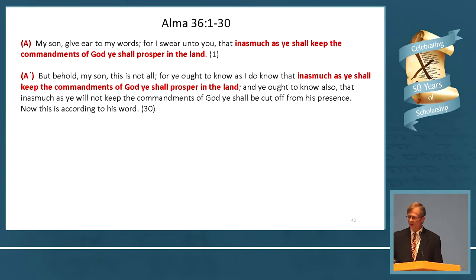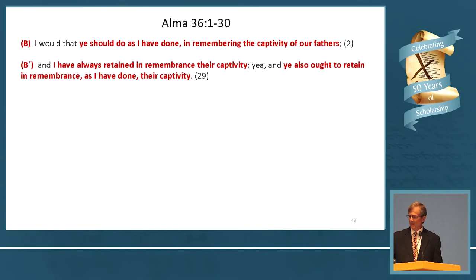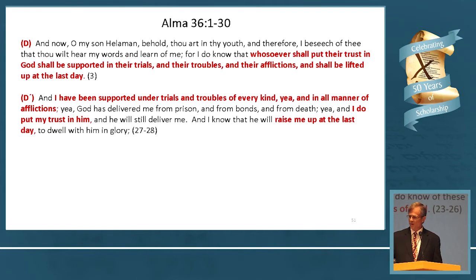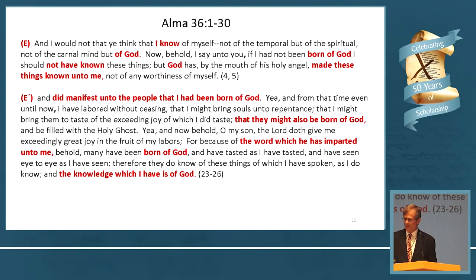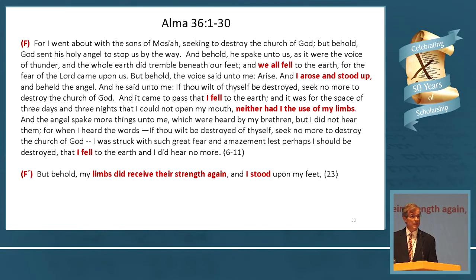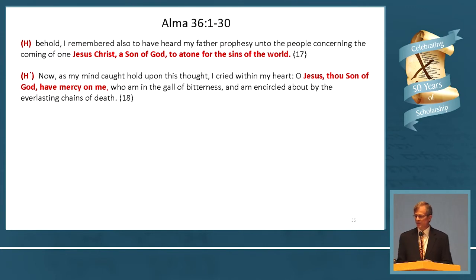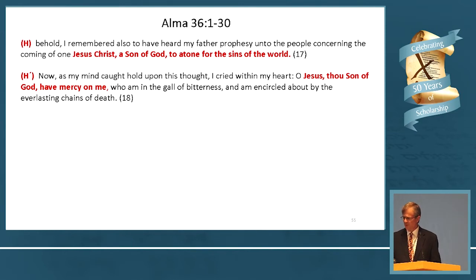There are only eight elements in Alma 36 under our rules. The outer elements, A and A-prime: 'commandments of God, prosper in the land.' All of these elements are full ideas: 'do as I have done in remembering the captivity and bondage' / 'deliver them from bondage'; 'support in your trials and troubles'; 'born of God' — that talks about his limbs. Beautiful piece. And Jack has written about this as well. 'Wracked with all my sins,' 'memory of my sins,' 'God upon his throne' — central element: Jesus Christ. His appeal to Jesus Christ. This is Alma. Beautiful. And we are, in fact, celebrating the discovery of this and other chiasms in the Book of Mormon at this conference today, discovered by John Welch 50 years ago in Germany.